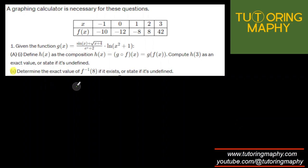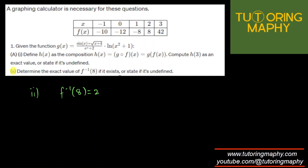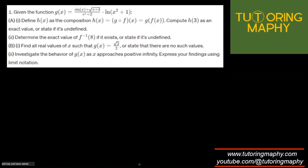Now for part A2: determine the exact value of f⁻¹(8), or state that it's undefined. Inverse means the input is the function's output — so we're looking for the x value where f(x) = 8. Looking at the table, we do see 8 as a functional value, and the corresponding x is 2. So f⁻¹(8) = 2.